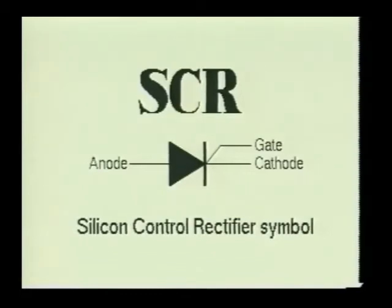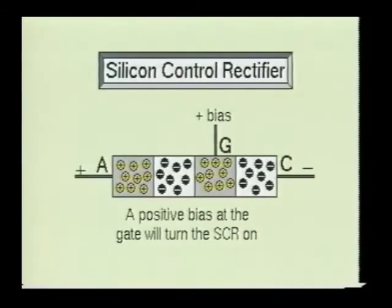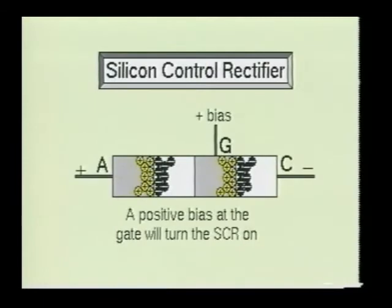Here we see a silicon control rectifier, or SCR for short. The SCR is very similar to a standard diode, except for one major advantage: it is controlled to a certain extent by a gate current. The construction of the SCR is very similar to that of the Shockley diode, with the only exception being that the SCR has a gate terminal connected to the P section nearest the cathode. When a positive voltage is applied at the gate of the device, the gate-cathode junction will become forward-biased, allowing the SCR to turn on.